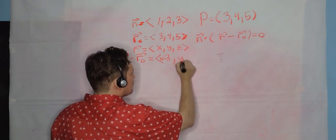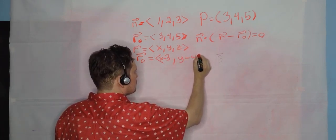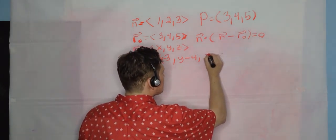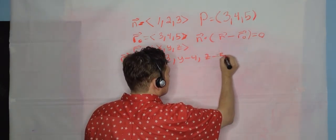so y minus 4 in this position. And the last one will be z minus 5, so z minus 5 in this position. Angle bracket.